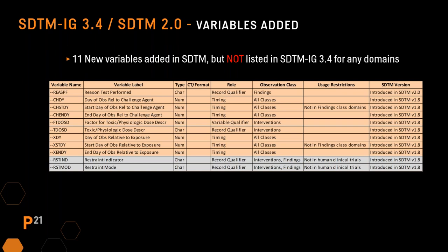There were also 11 new variables added to SDTM 2.0 but not listed in the implementation guide. Reason test performed was introduced in SDTM 2.0, but it's not clear why this wasn't modeled in any domain in the IG. The others were introduced in SDTM 1.8 and are more applicable for SendIG Animal Rule. Two of them are only for use in SEND and cannot be used in clinical trials.